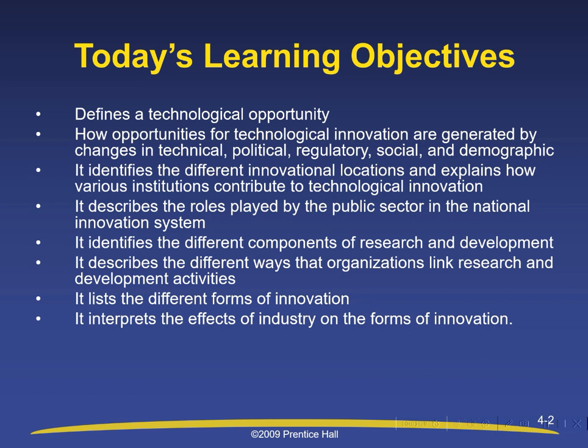It describes the roles played by the public sector in the national innovation system. It identifies the different components of research and development, describes the different ways that organizations link research and development activities, lists the different forms of innovation, and interprets the effects of industry on the forms of innovation.